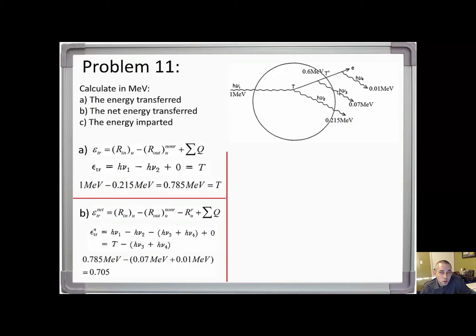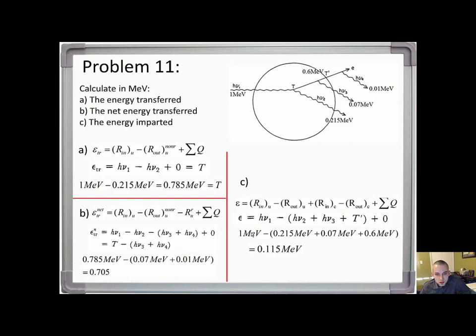You have to be very careful with the definitions for each term — it is a lot of memory work. For part c, we have our initial photon of 1 MeV representing that term, then subtract the uncharged out within the volume — so not the 0.01 MeV, but the 0.215 MeV and 0.07 MeV — and then the charged out, which is 0.6 MeV representing that quantity. There's our final answer.